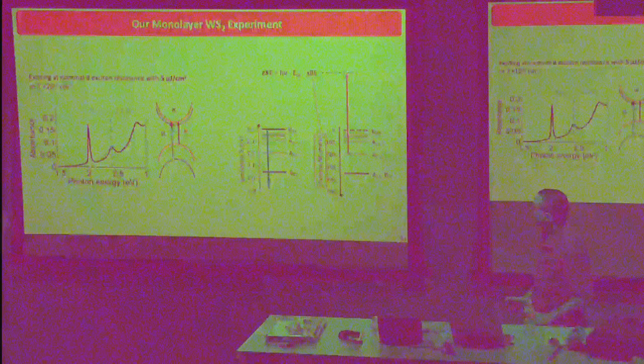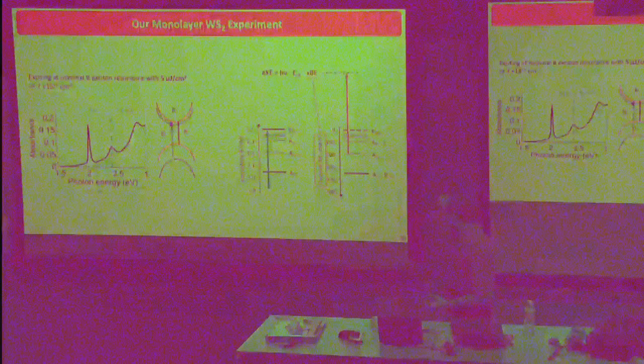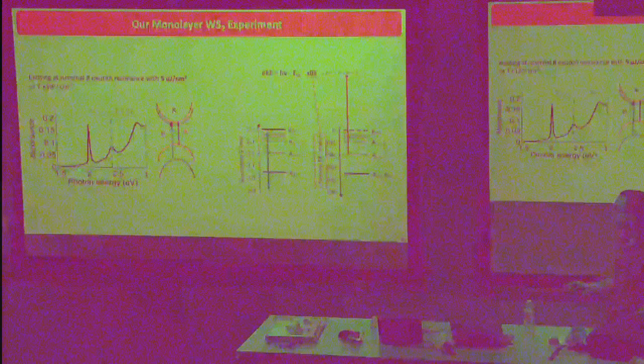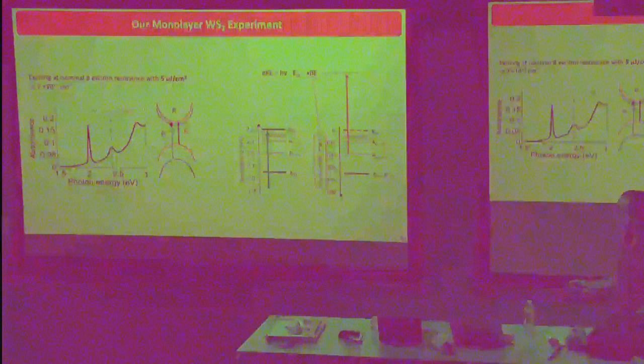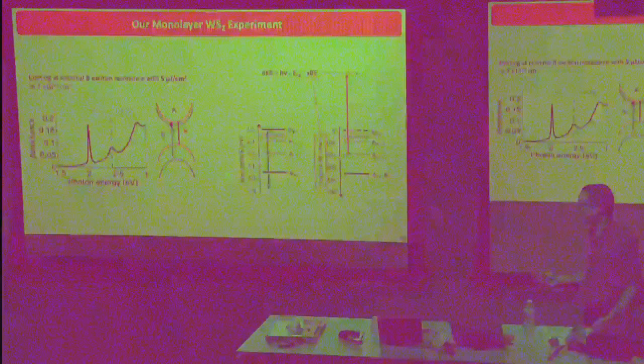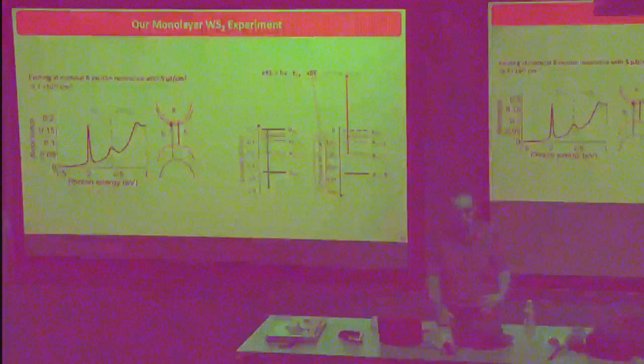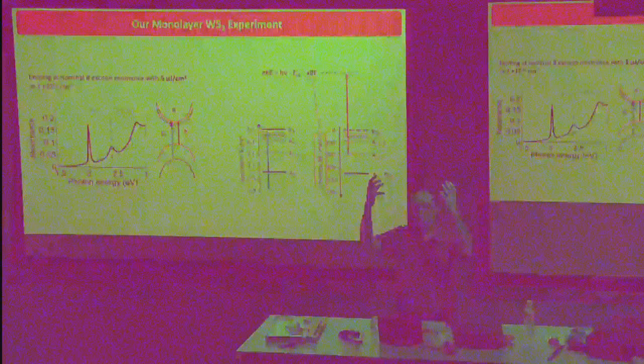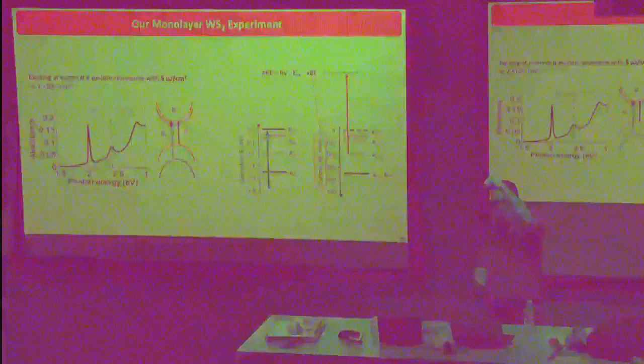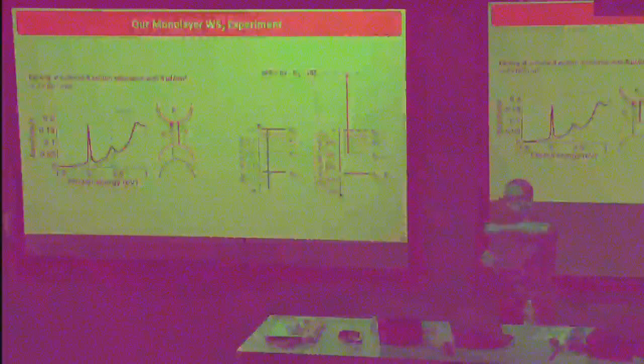You can get more quantitative: using a tight-binding model you can calculate what these distributions should look like, accounting for both the matrix element from the pump and the matrix element for the photoemission, and compare to experiment — it's quite nice. You're just seeing the selection rules in action. Now looking at how the excited polarized electrons in the conduction band relax, and how electron-electron and electron-phonon scattering eventually scramble the anisotropy — that's pretty interesting.